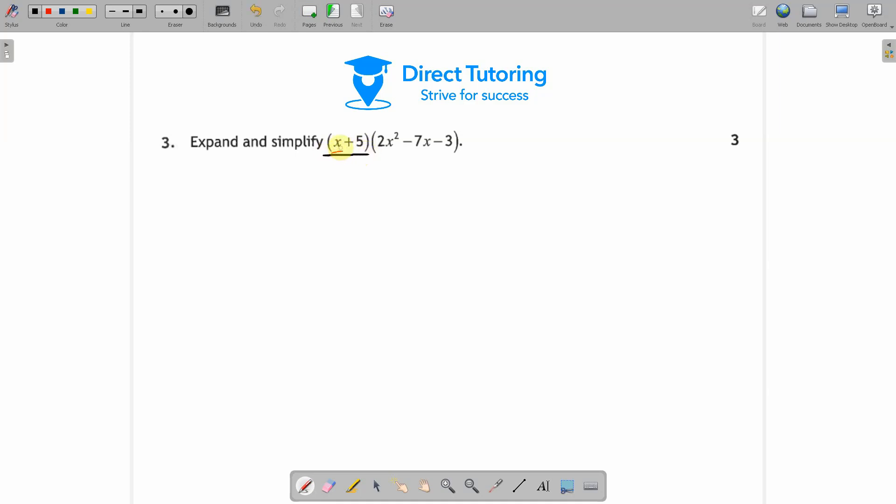Take the x individually and then the 5 individually and multiply them each by all 3 terms in this bracket. So we'll do the x times it all by 2x² - 7x - 3. That's going to give us 2x³ - 7x² - 3x.